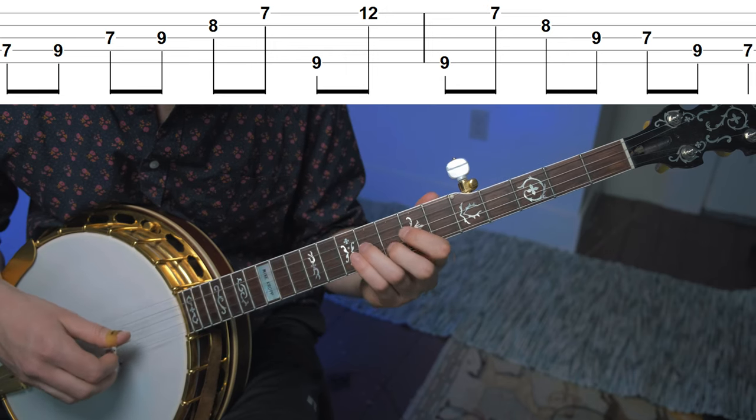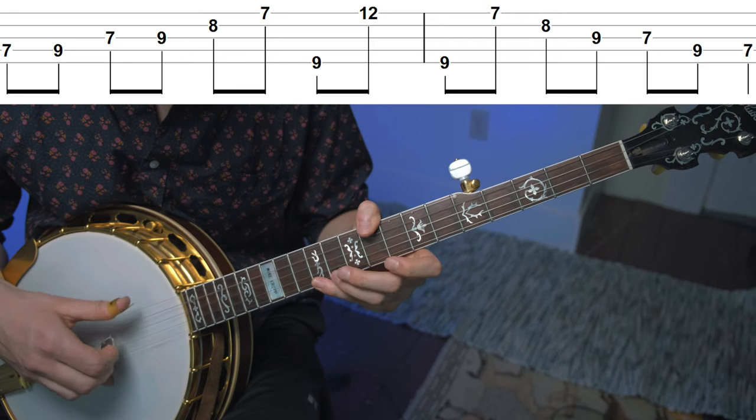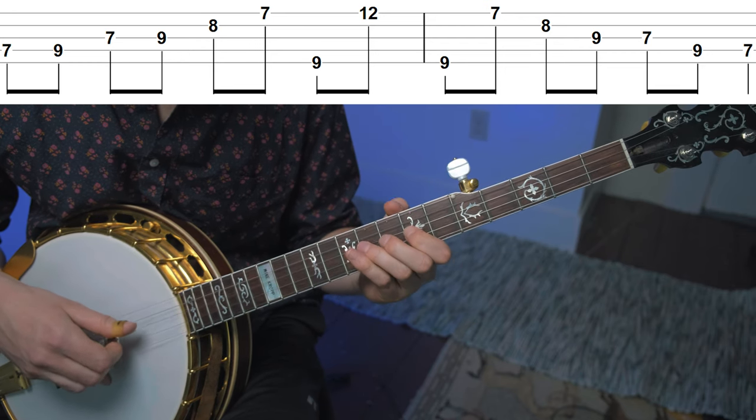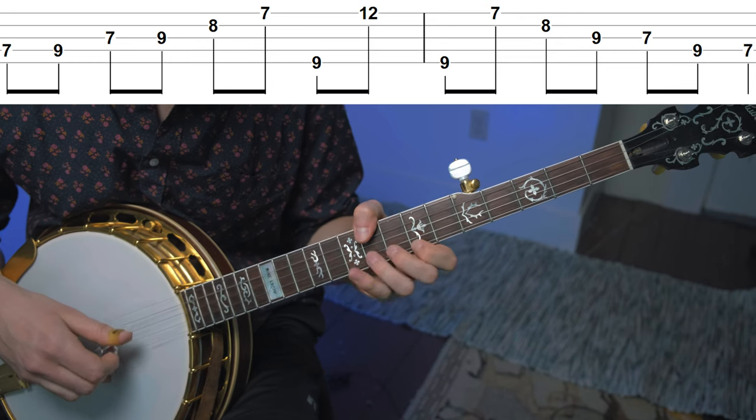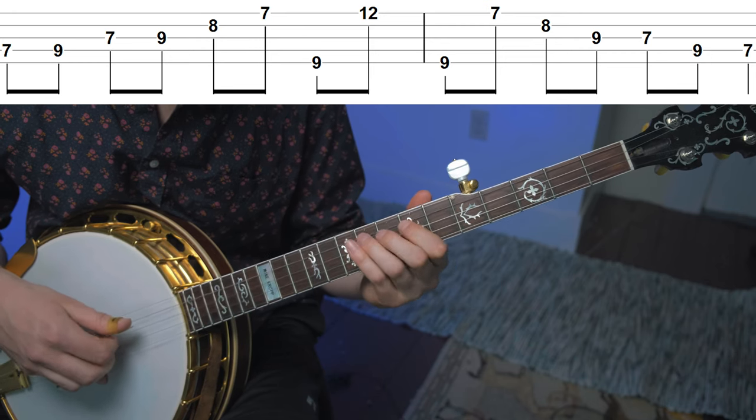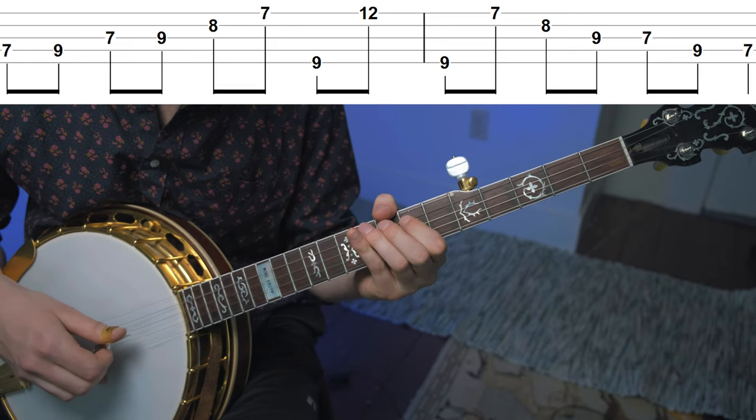Another thing we can do is extend these shapes beyond one octave. If we take this G major or E minor pentatonic shape and play the last note B with our thumb, then we can reach up to the twelfth fret on the first string with our little finger.